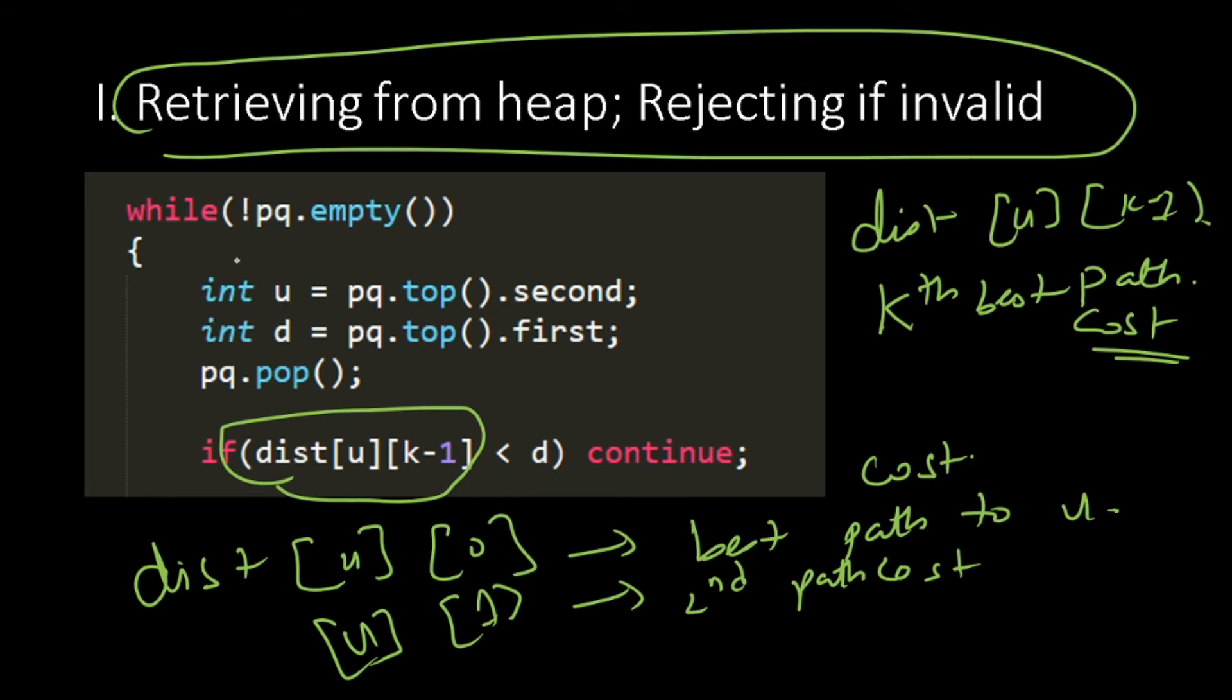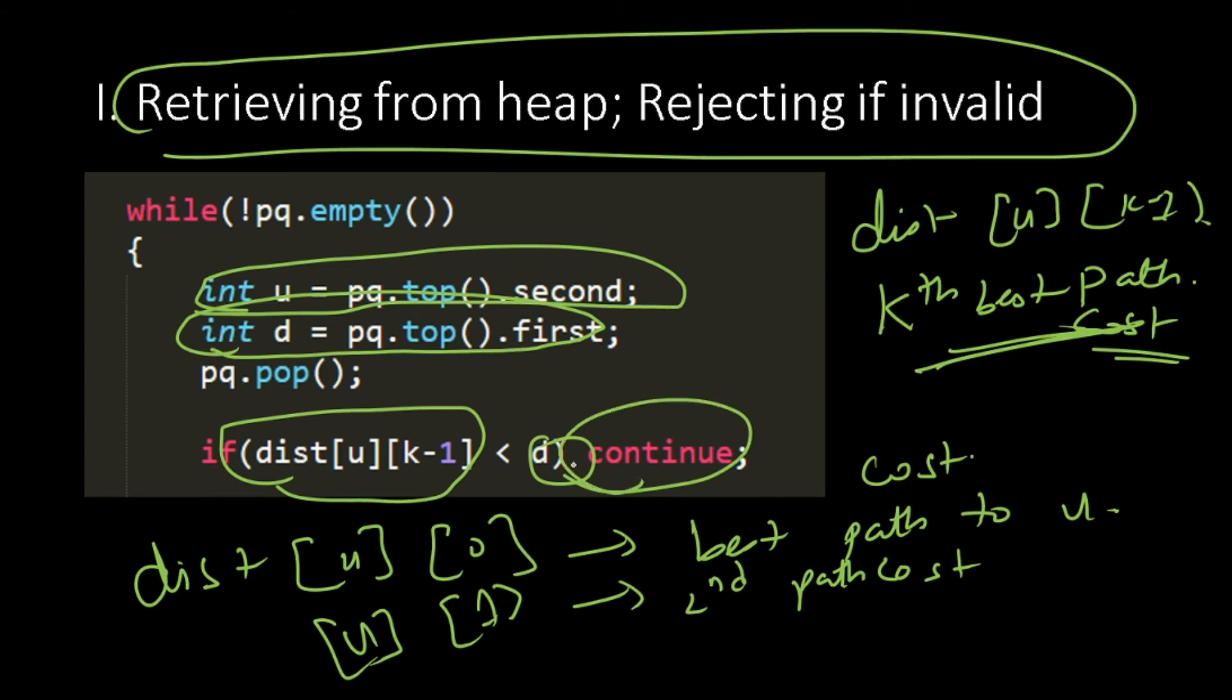So first we have pulled thing out of our heap. So I can go to location number u, at the cost d, if this deal is worse than the best k-th best deal, we continue.